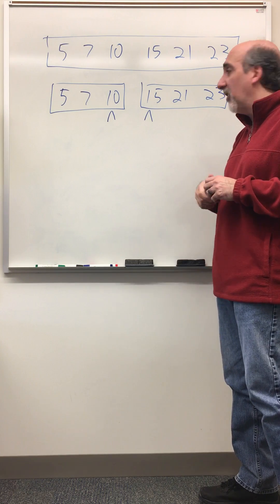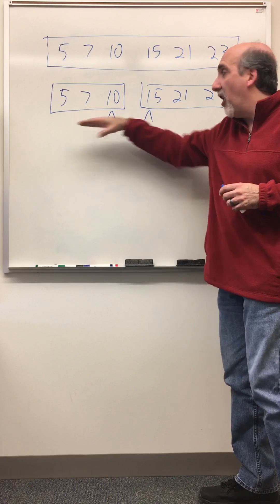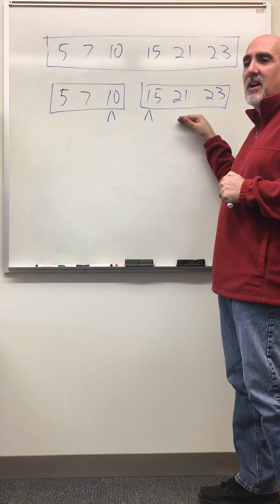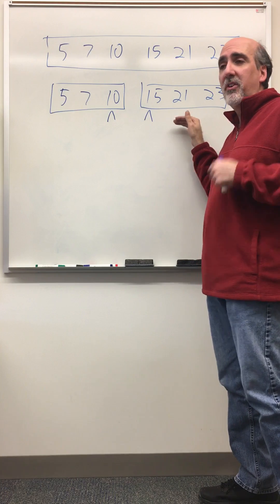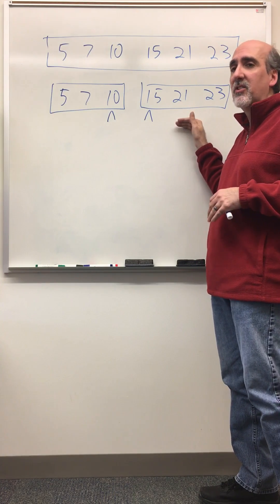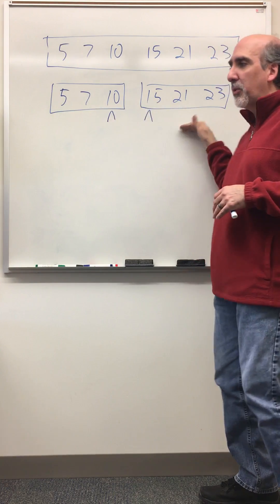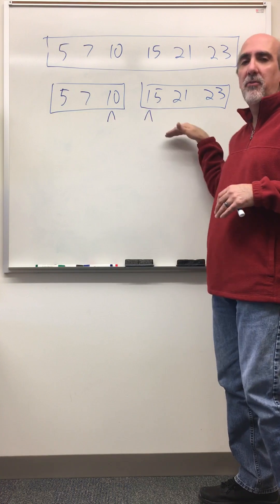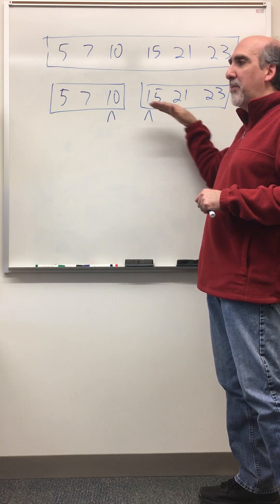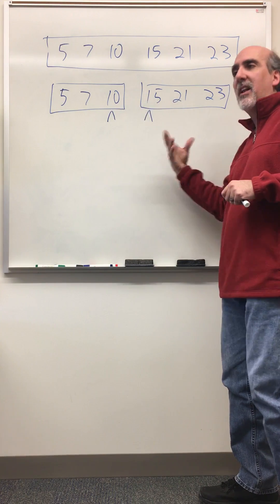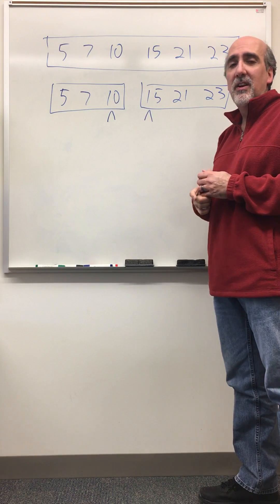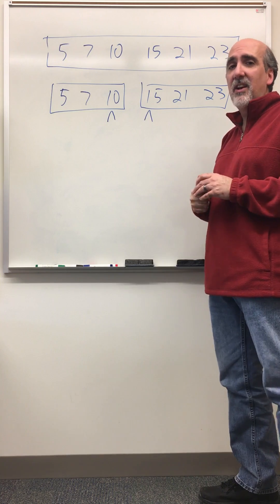And then you just have to make sure that the small half and the large half are actually either the same size or we don't want them to be different by more than one in size. So if I've got three and three or four and three or three and four, I'm fine. But if I get up to, say, five and three, I've got to rebalance it to have four and four. So that's the basic idea of it.